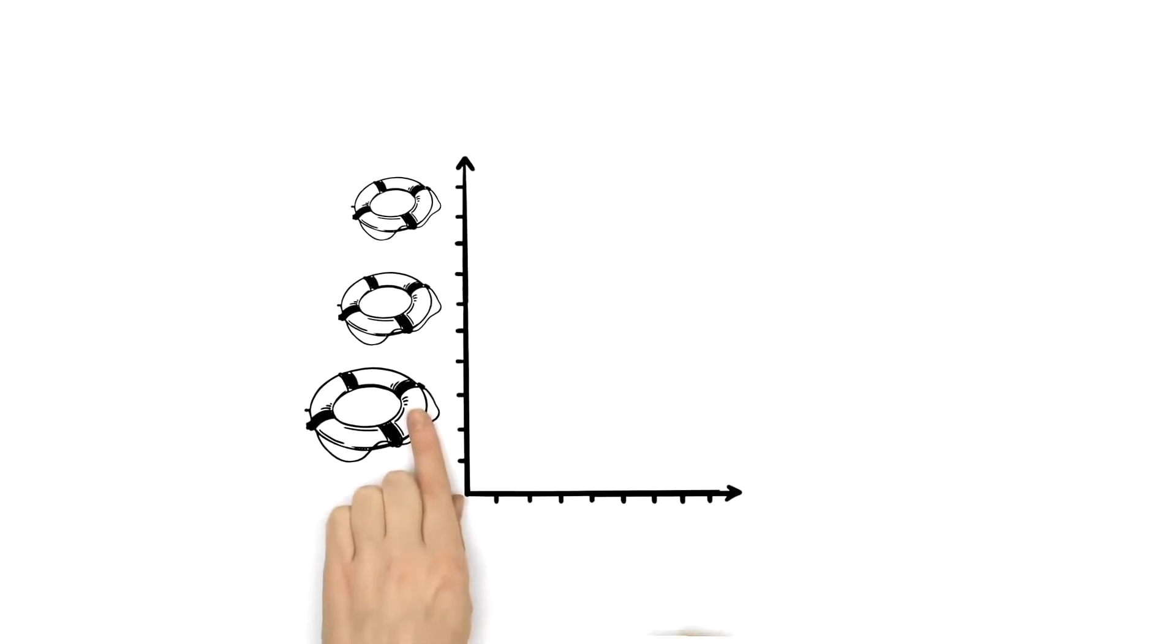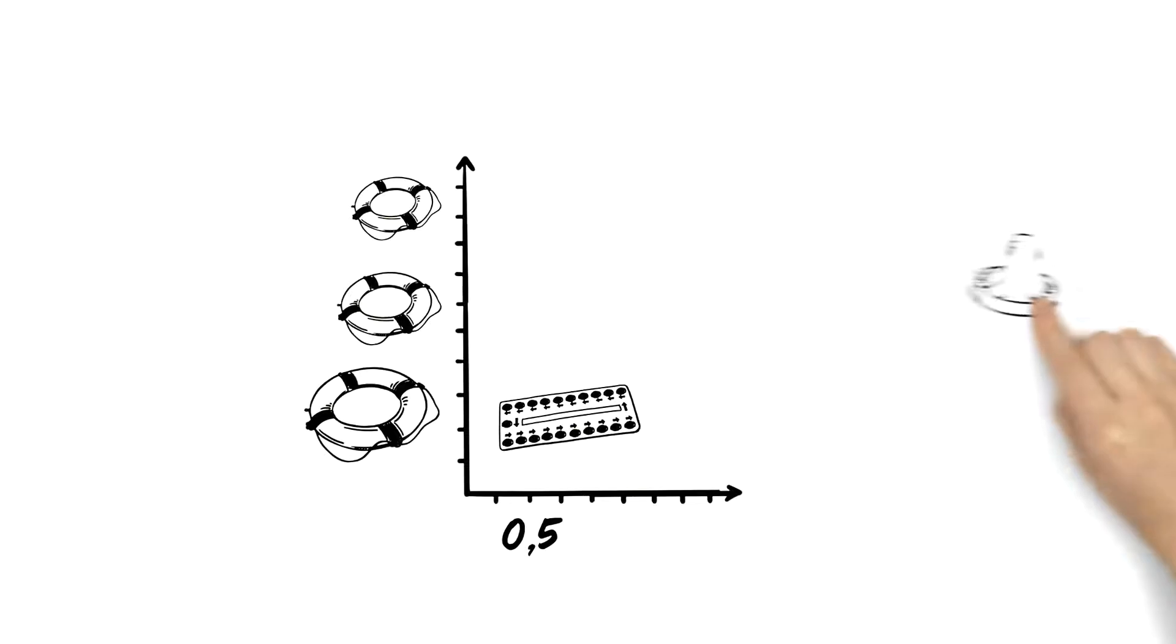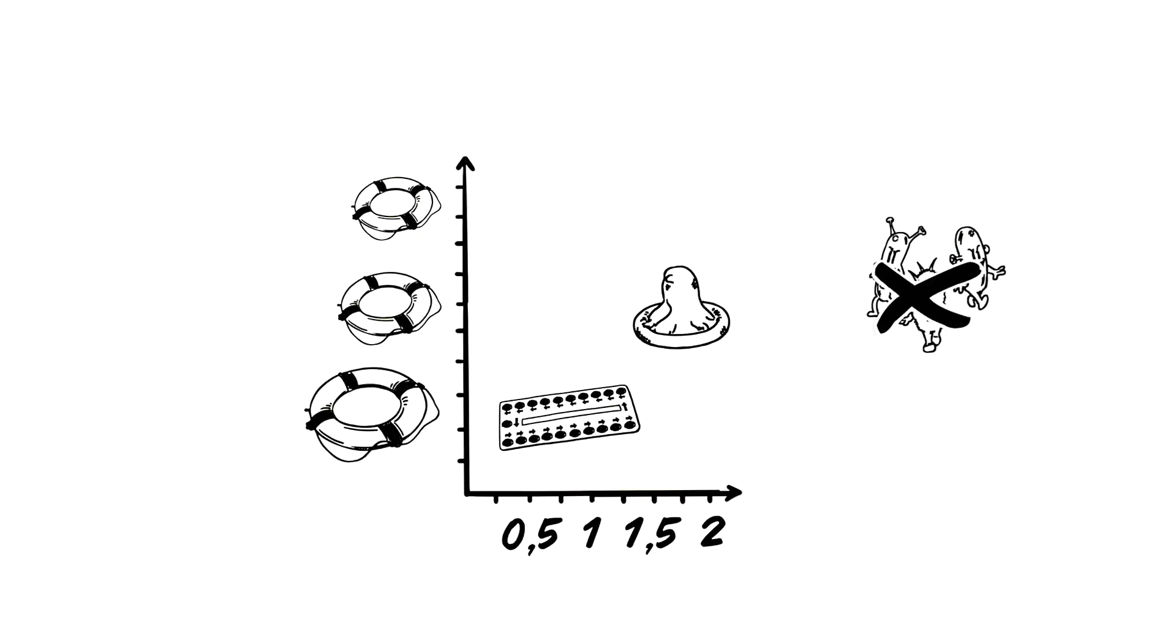Top of the list is the pill, with less than one pregnancy per year. When using a condom, the risk of getting pregnant is slightly higher. However, it is the only contraceptive that protects against sexually transmitted infections, for example, the immunodeficiency disease HIV.